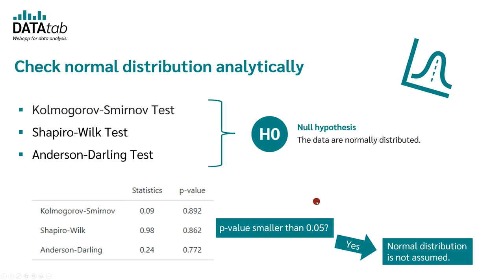In practice, however, values greater than 0.05 are assumed to be normally distributed. To be on the safe side, you should always take a look at the graphical solution, which we will talk about in a moment.